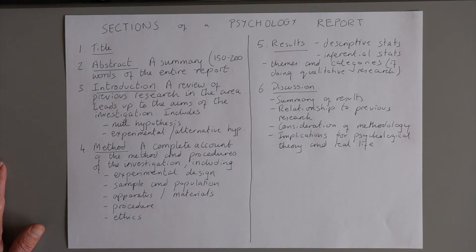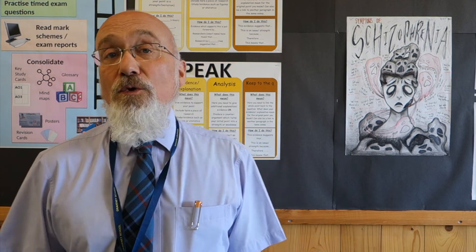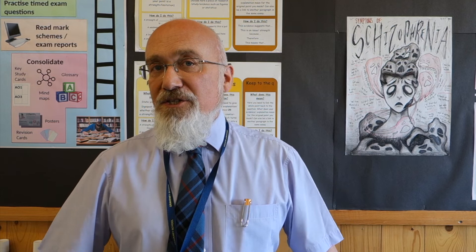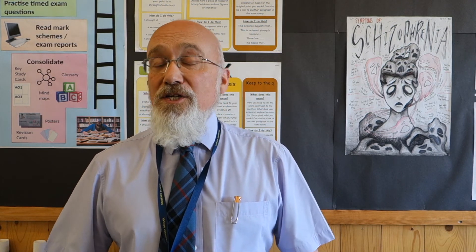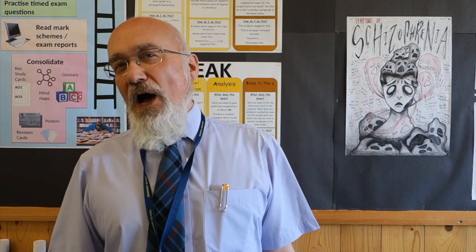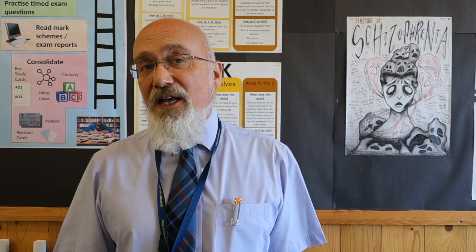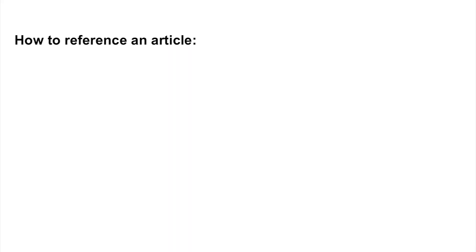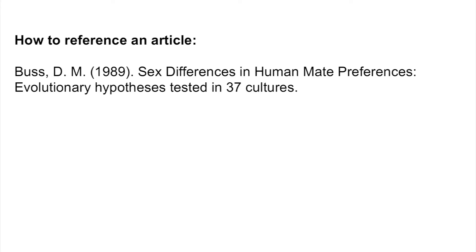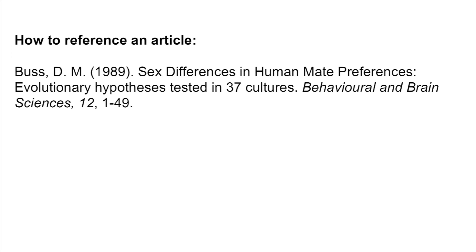The references section provides signposts so readers can locate the original sources. For a journal article like Buss 1989, you include: the author's surname followed by initials, the year of publication, the title of the article, the name of the journal, the volume and issue number, and the page numbers. That way, anyone in a psychology library can go straight to Buss's original article.